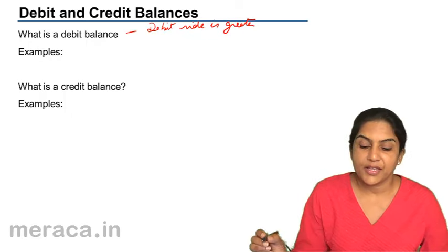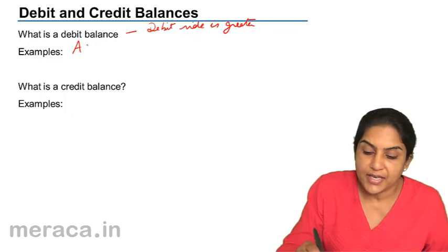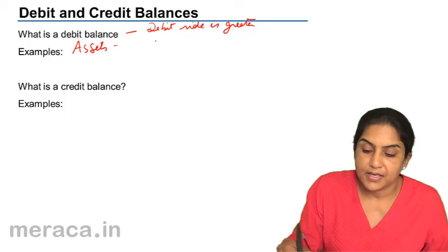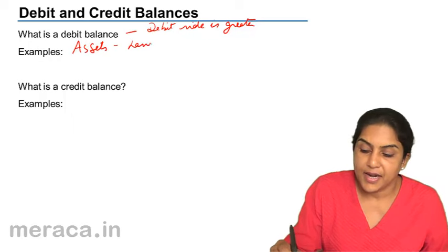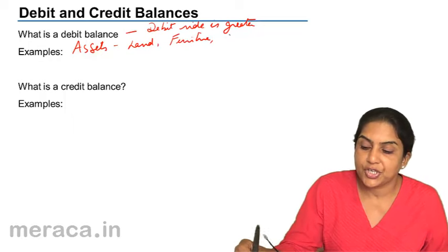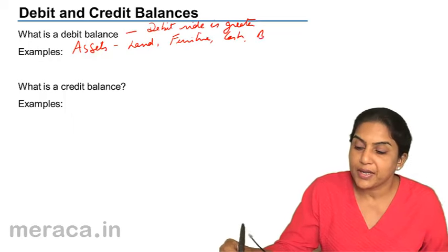What are the examples of the debit balance? All assets, land and building, furniture, cash, usually bank.